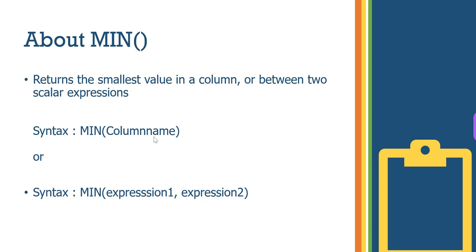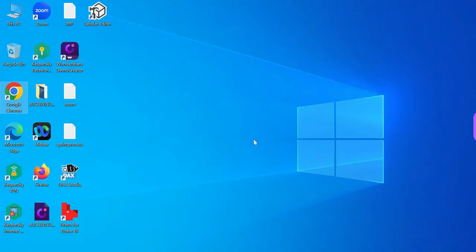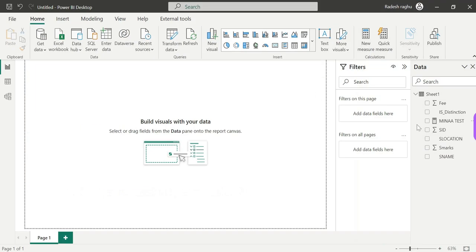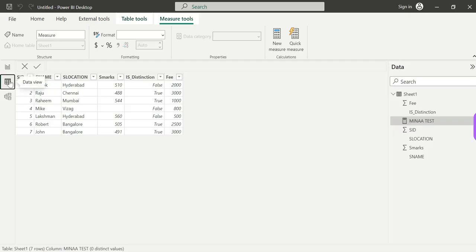The MIN function returns the smallest value in a column or between two scalar expressions. You pass a column name, and if there is a smallest value it will return it. You can also pass two expressions to find the smallest value.